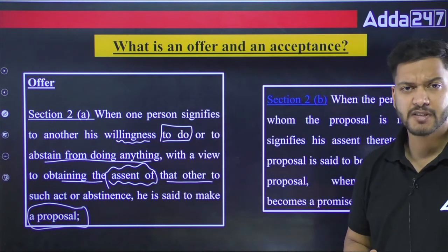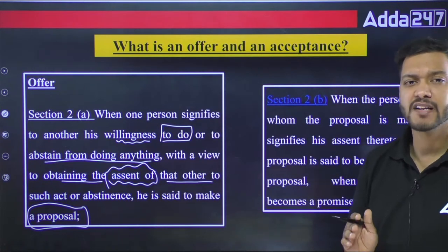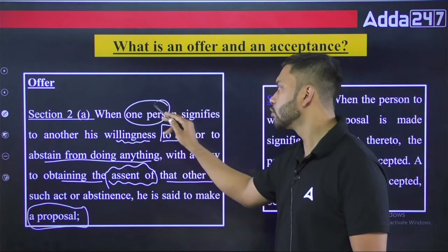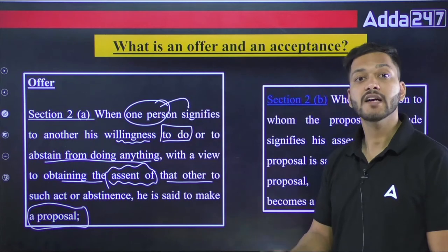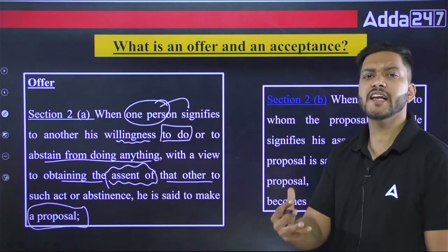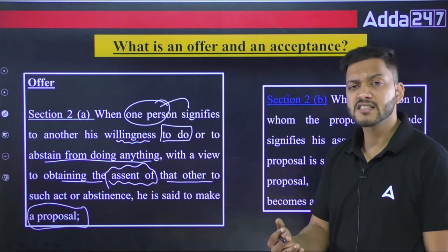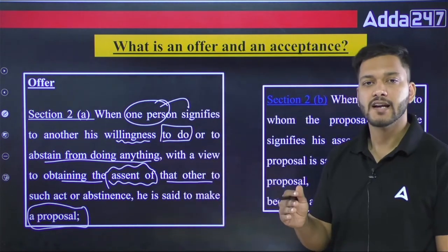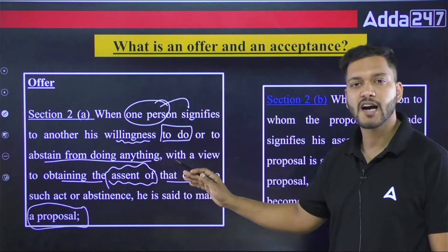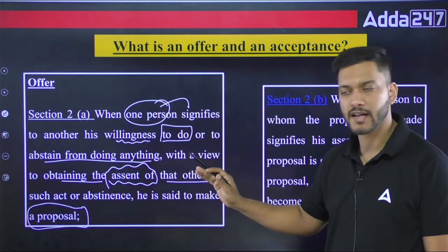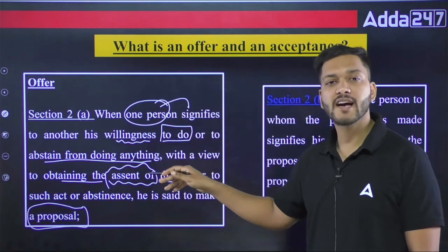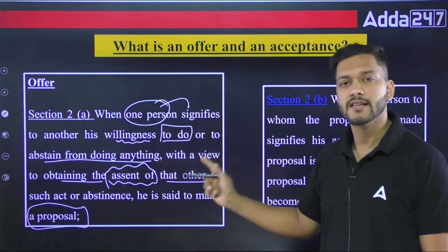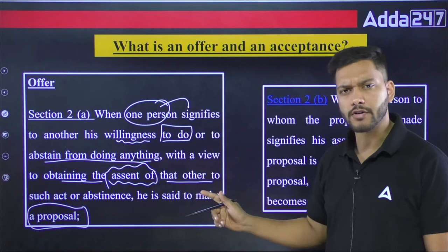I hope things are clear here. The elements of an offer: first, a person is signifying to another their willingness — their desire to do something or abstain from doing something. 'Abstinence' means refraining from an act. And with this, the offeror wants the other person to give their assent — that is what is known as an offer.